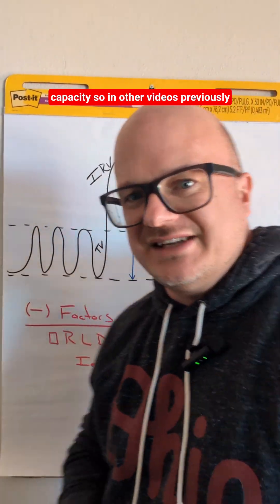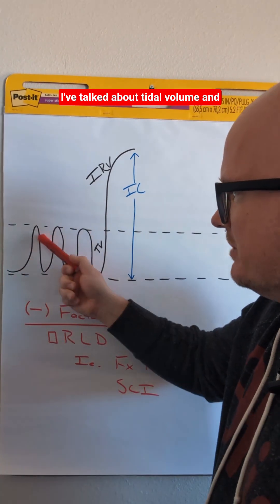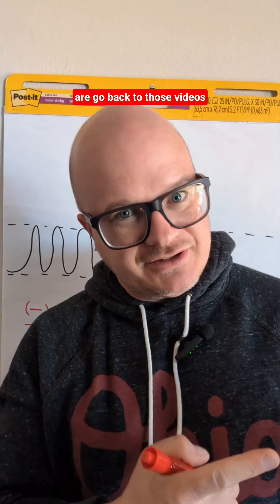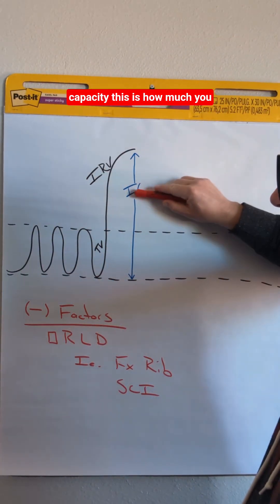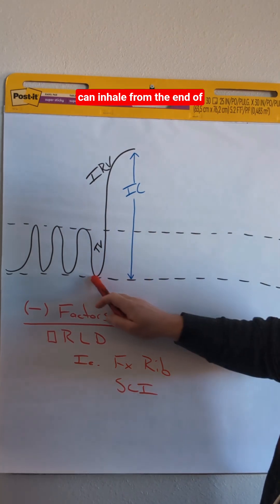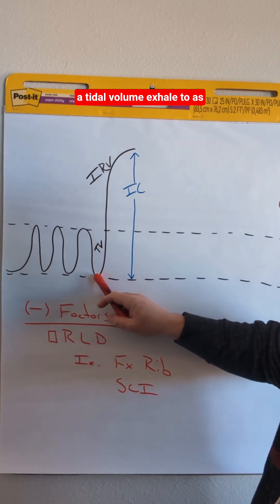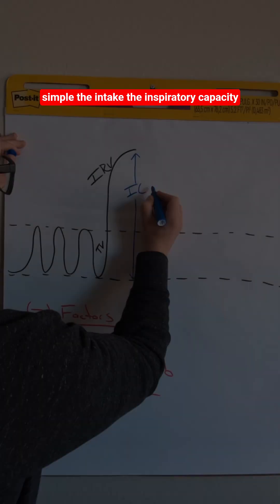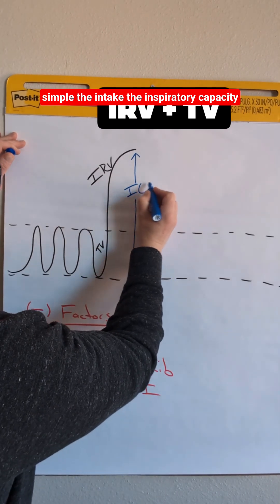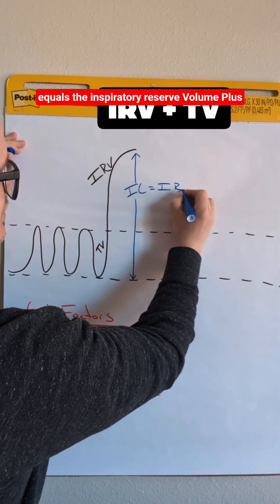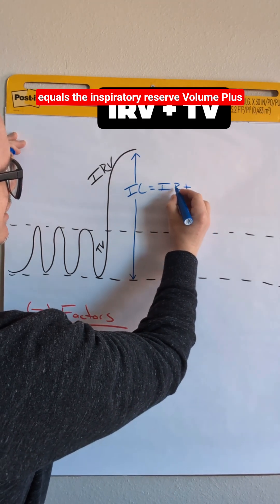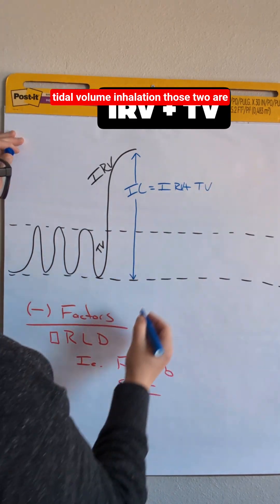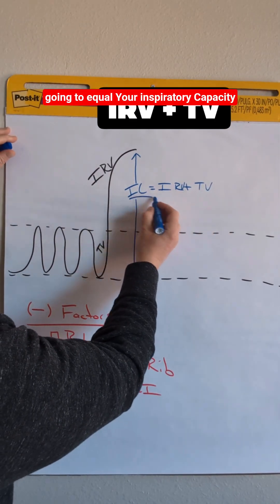Let's get into it — inspiratory capacity. In previous videos I've talked about tidal volume and inspiratory reserve volume. If you don't know what those are, go back to those videos. Now we're moving on to inspiratory capacity. This is how much you can inhale from the end of a tidal volume exhale to as much as you can actively inhale. The math is simple: inspiratory capacity equals the inspiratory reserve volume plus the tidal volume inhalation. Those two equal your inspiratory capacity.